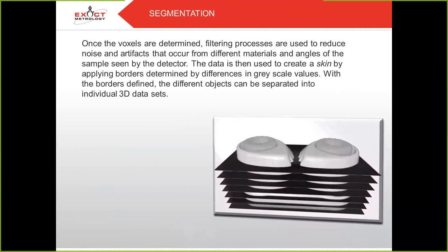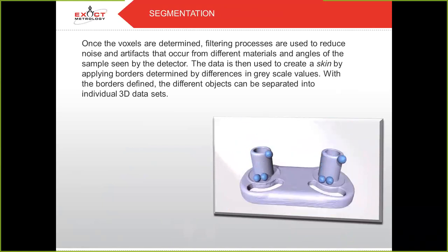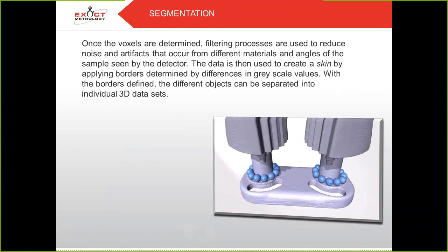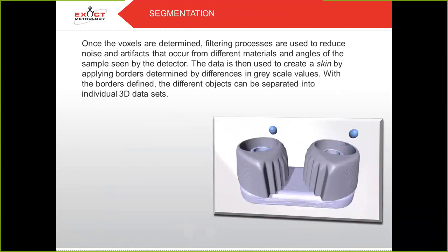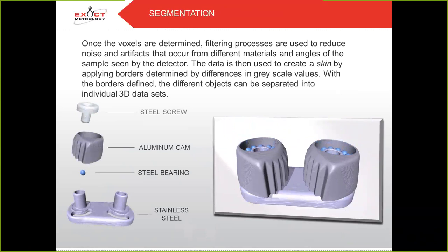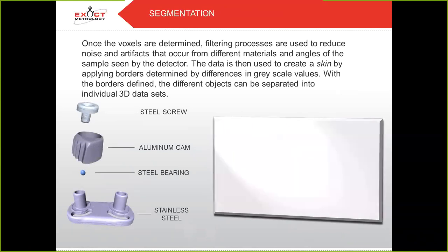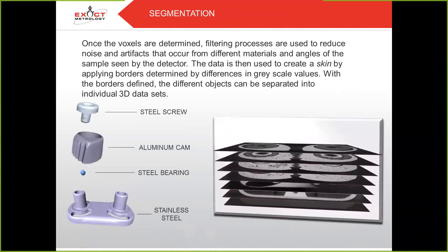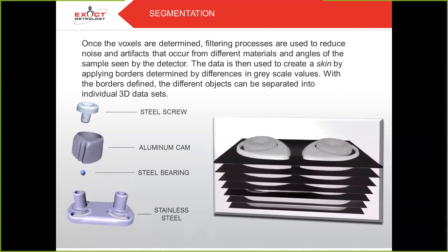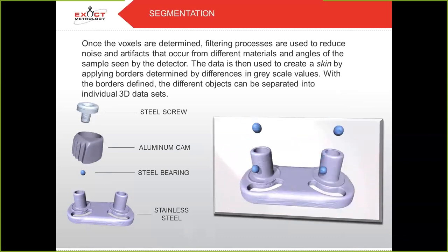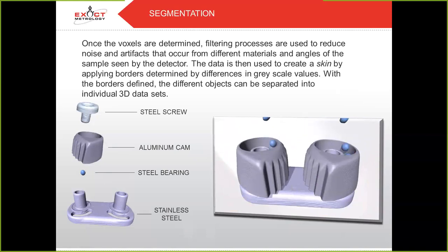On to segmentation. Because each set of components in an assembly are made of different materials, they attenuate differently and therefore produce distinct sets of voxels. Once the voxels are determined, filtering processes are used to reduce noise and artifacts that occur from different materials and angles of the samples seen by the detector. The data is then used to create a surface skin by applying borders determined by differences in the grayscale value. With the borders defined, the different objects can be separated into individual 3D datasets.